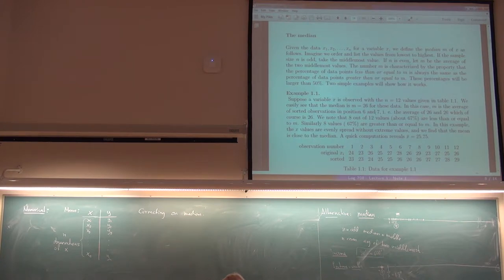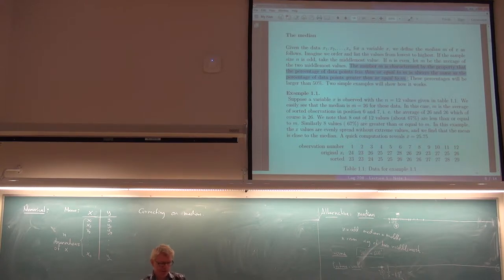So I'm just going to correct this on the median. I say here we define the median as, we order the values and then take the middle one or the average of the two middle most values. Then I say something that is not true. I say that the median is characterized by the property that the percentage of data points less than or equal to M is always the same as the percentage of data points greater than or equal to M. So that's not true, in fact. And then I have an example where I sort of miraculously enough make the same mistake. In the new version of the compendium that will probably be out next week, I have deleted this sentence.